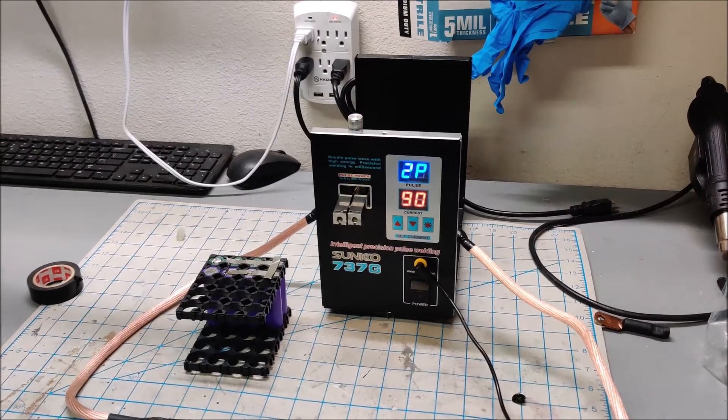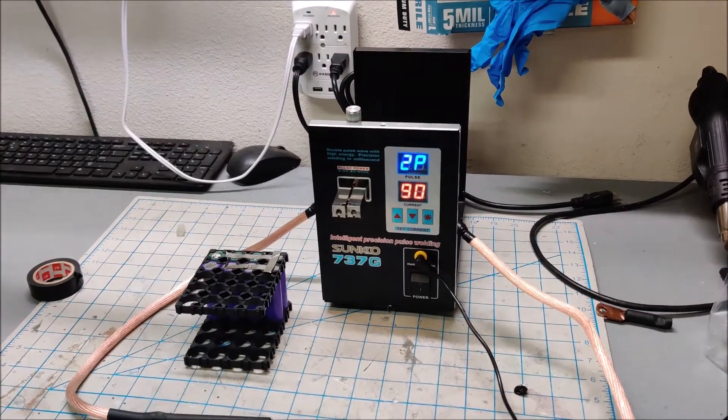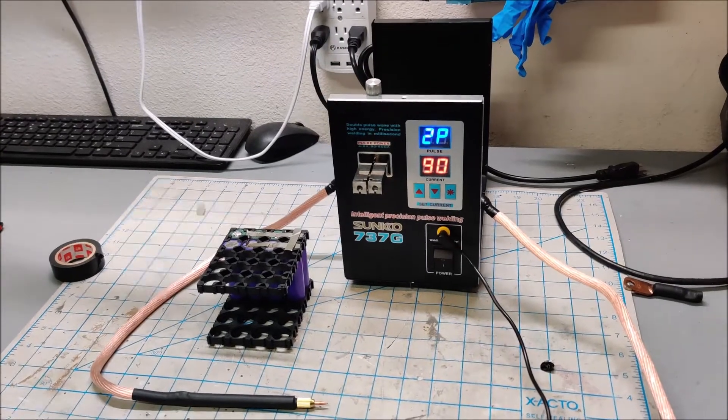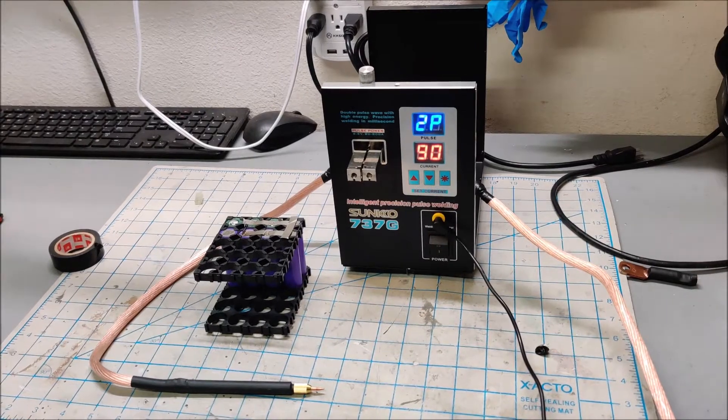This is my Sunco 737G, the 110-volt version. I bought it to do some testing and spot welding, and I have to say it's a piece of junk.